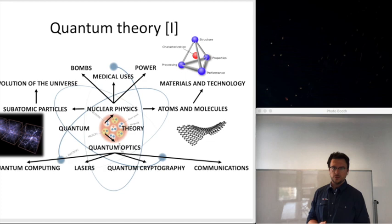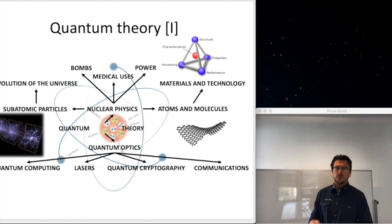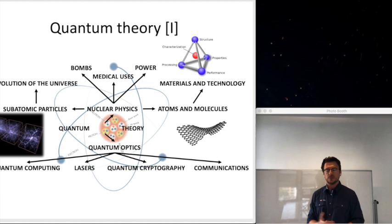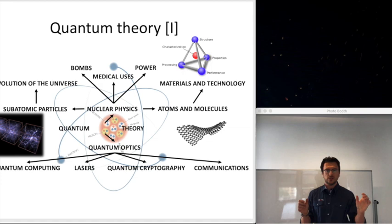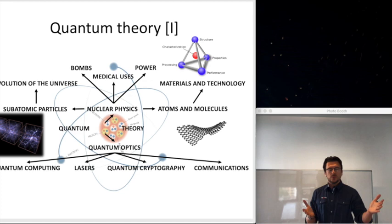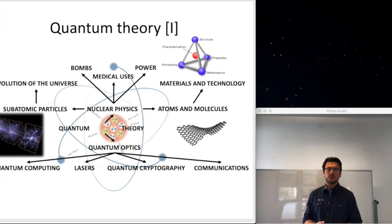That's why we're very interested in using quantum computers for simulating quantum systems — using one quantum system to simulate another. We're not there yet; we can simulate single simple systems. With classical simulations of bigger systems, we make assumptions and approximations — for example, assuming nuclei don't move. The more approximations we make, the less accurate the simulation, and the less we understand the molecule. Some consider quantum simulation of physical systems the killer app for quantum computers.